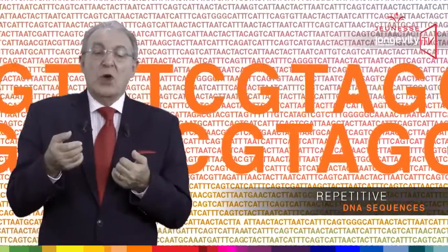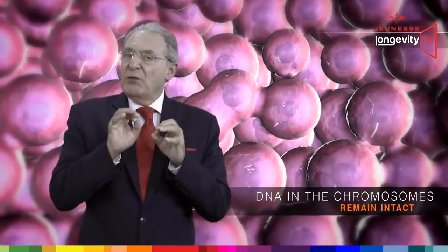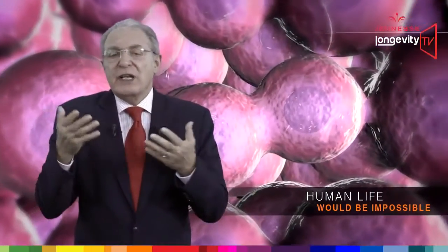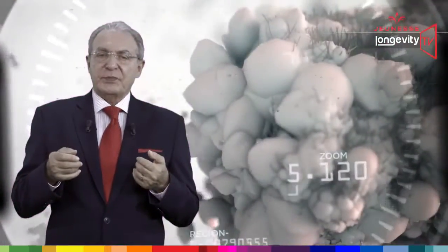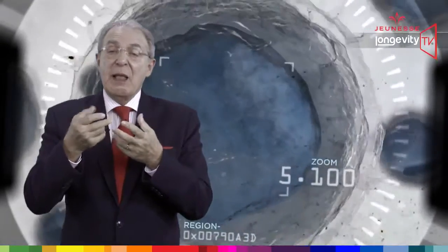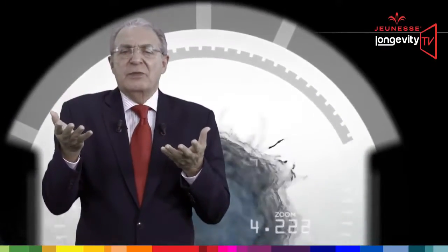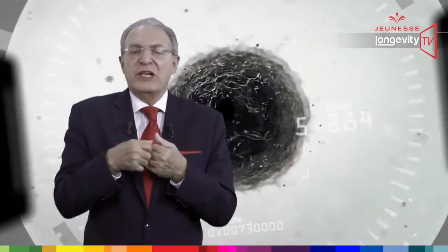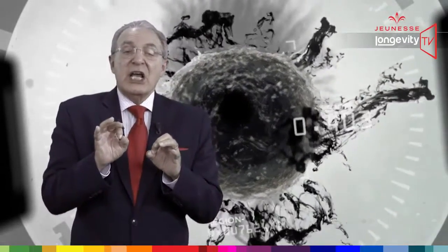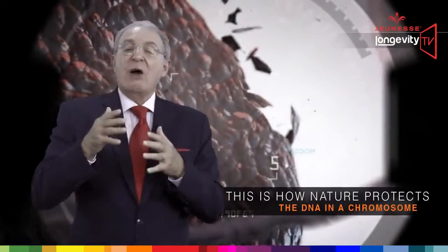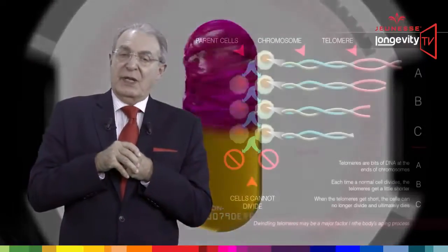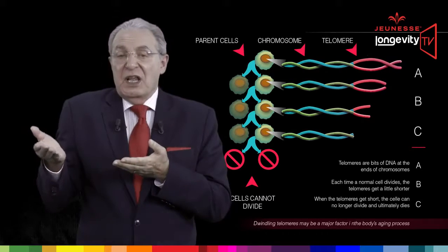So why is this DNA made of repetitive DNA sequences? When cells divide and multiply, it is very important that the DNA remain intact. If we lose a portion of the information — a word in our DNA — every time it is replicated, human life would be impossible. So with every replication of our DNA, part of the telomere sequence is chopped off, but this doesn't matter because we are losing the same sequences of nucleotides — the same code. There is still another identical sequence. This is how nature protects the DNA in a chromosome.